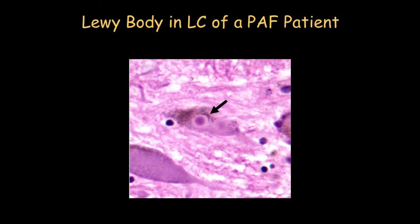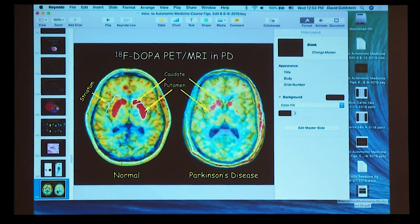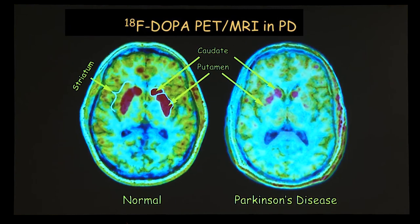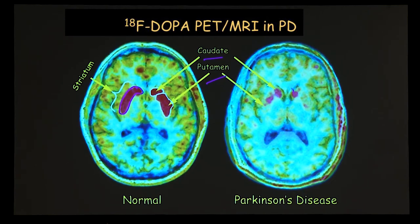This is what a Lewy body actually looks like. In Parkinson's disease, the main damage is in the putamen. The striatum — which looks like a slug — has two parts: the caudate and putamen. I think of a sad clown's eyes, where the eyes themselves are the head of the caudate, and the eyeliner is the putamen. In Parkinson's disease, the main damage is at the level of the putamen.